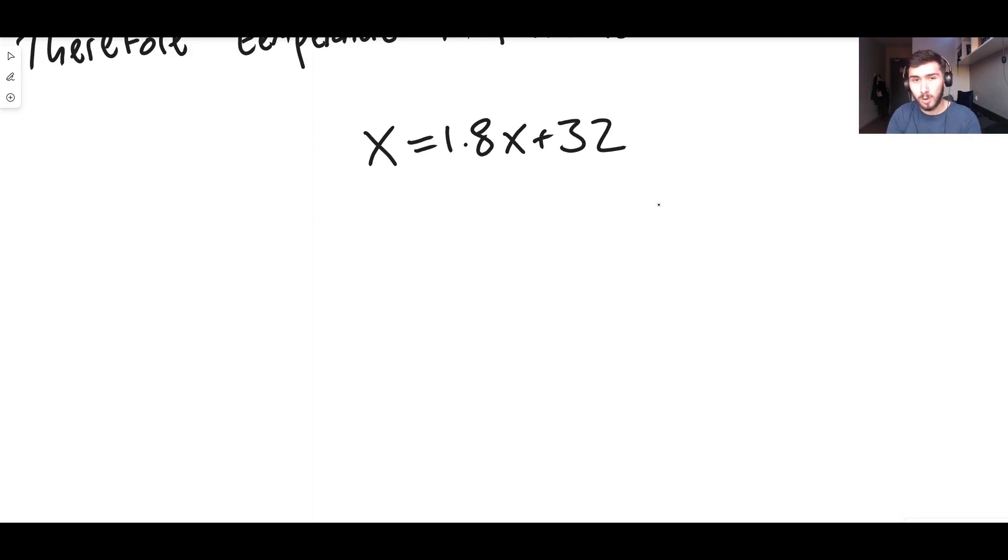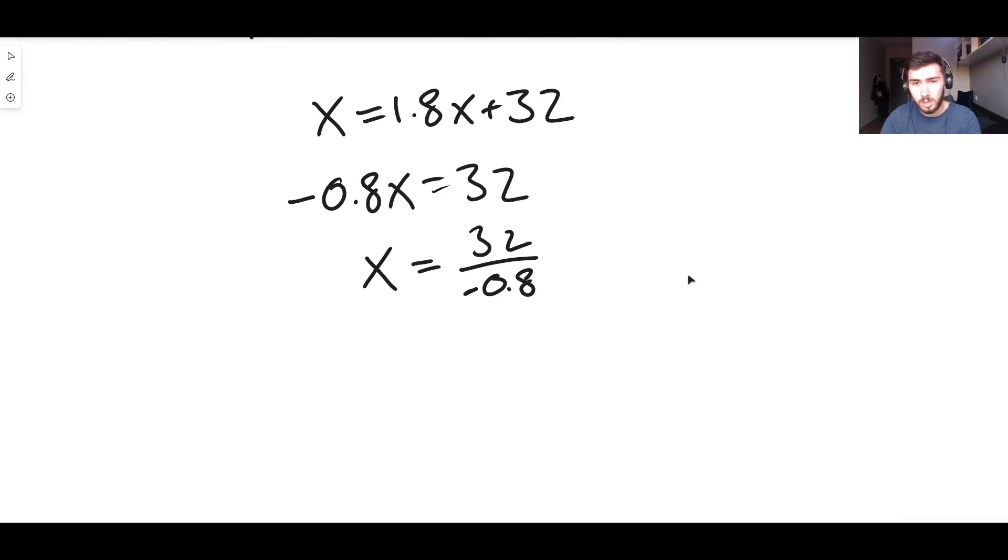We just need to rearrange this equation a little bit. Why don't we take 1.8X away from both sides? That would give us minus 0.8X on the left-hand side, and that's equal to 32 on the right. Then what we can do is divide both sides by negative 0.8 to get X on its own.